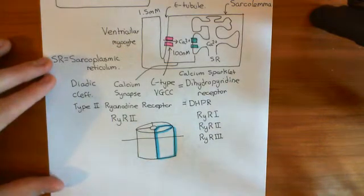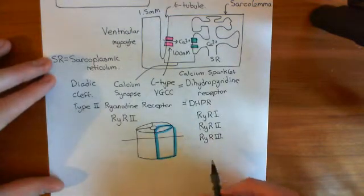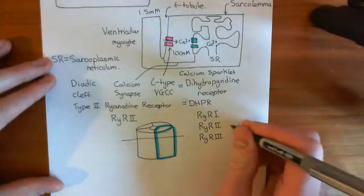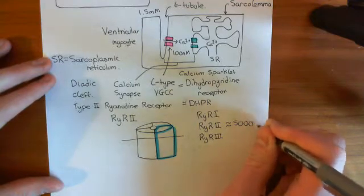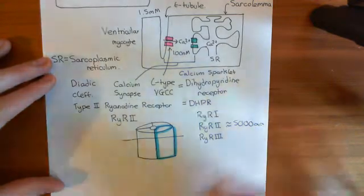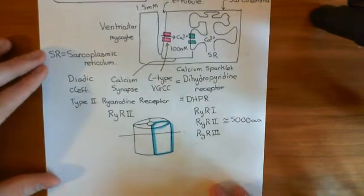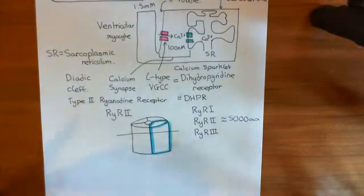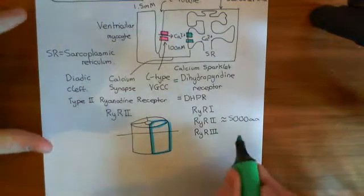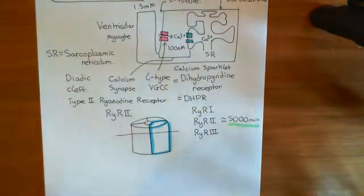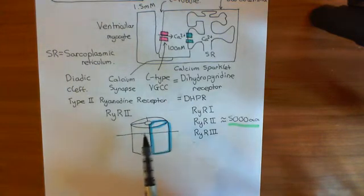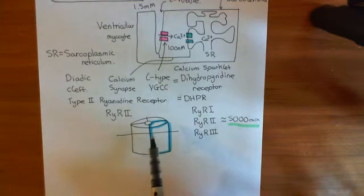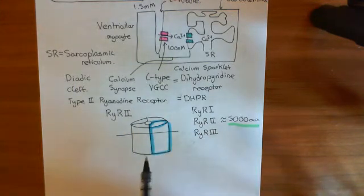Another important fact about ryanodine receptor proteins: these proteins are absolutely massive — giants in the world of proteins. Each one is approximately 5,000 amino acids long. I previously said 4,000 amino acids in my earlier video — that was incorrect; 5,000 is the correct figure. Since you are sticking four of these together, you get a receptor of around 20,000 amino acids. These are visible under electron microscopy.